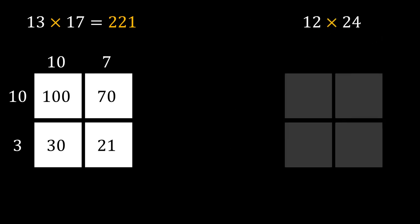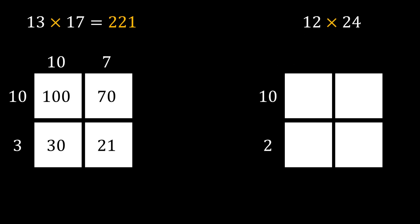12 can be expanded as 10 and 2, and 24 can be expanded as 20 and 4. Now we have to multiply all of these 4 numbers one by one. Starting with units, 4 times 2 equals 8 and 4 times 10 equals 40.